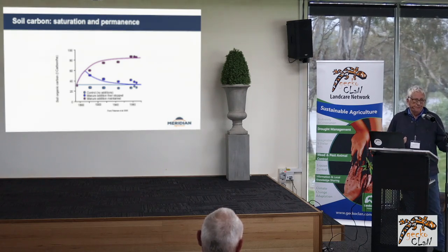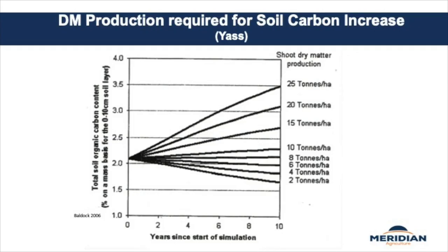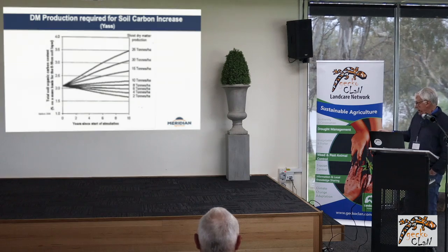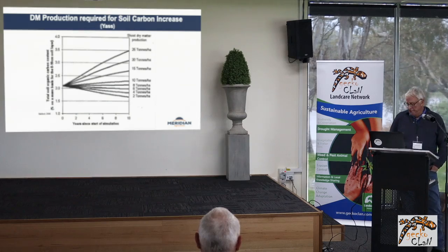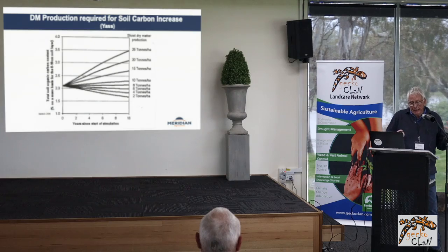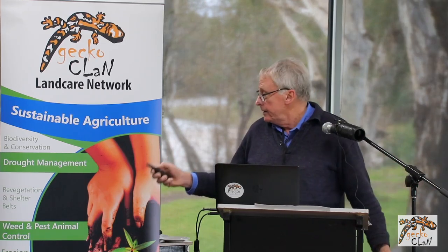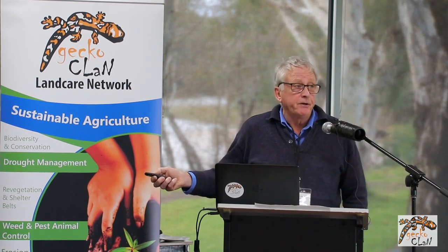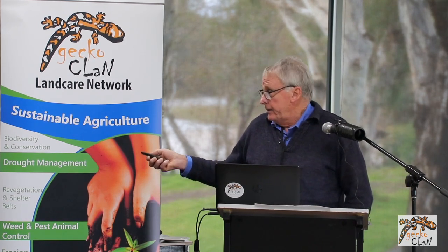There are really only two ways of increasing soil organic carbon: add it artificially or grow it. Looking at modelling by Jeff Baldock from CSIRO in South Australia, around the Ass area — if we're at 2.1% carbon and want to get to 2.6 or 2.7%, we need to be producing about 15 tonnes of dry matter per hectare per year. Steady state was sitting at about 8 tonnes per hectare per year. These are obviously pretty unrealistic figures.